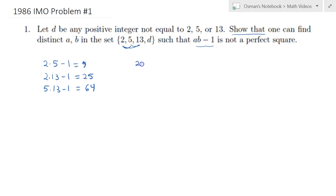So I might have 2 times d minus 1, or I might have 5 times d minus 1, and finally 13 times d minus 1. The claim is that all three cannot be perfect squares.